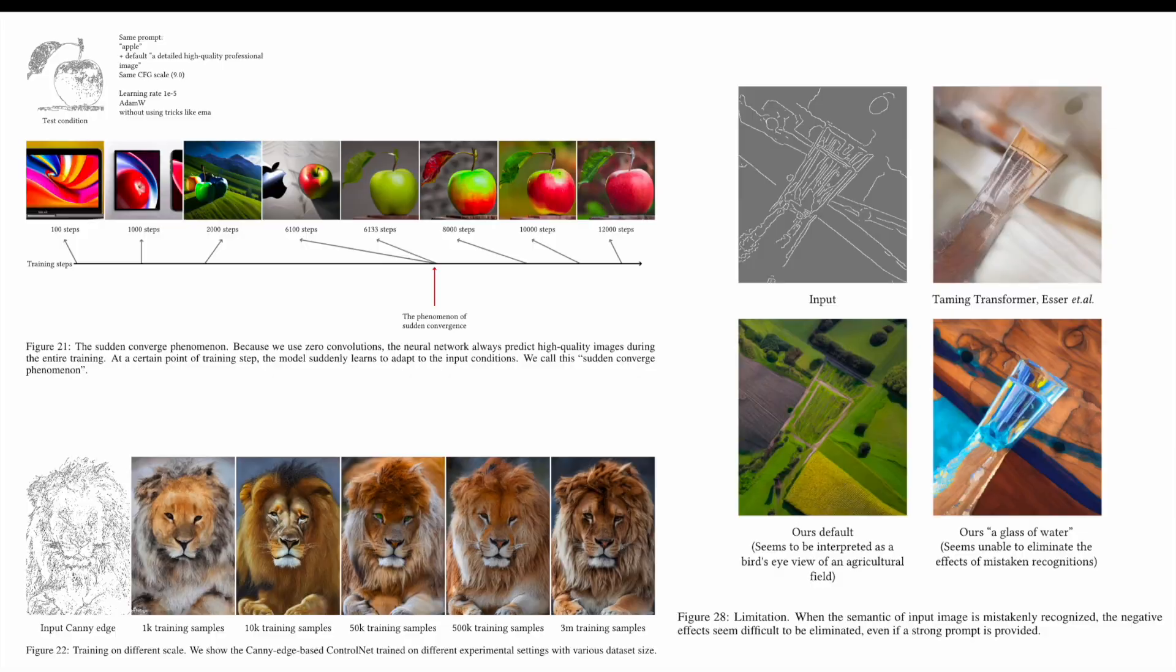Here, the figure of apples shows a sudden convergence phenomena where the model suddenly can follow the input conditions. The figure of lions shows the result of canny edge-based ControlNets trained with different dataset scales. The figure on the right shows one limitation of ControlNets, which is when the semantic interpretation is wrong, the model may have difficulty generating correct content.